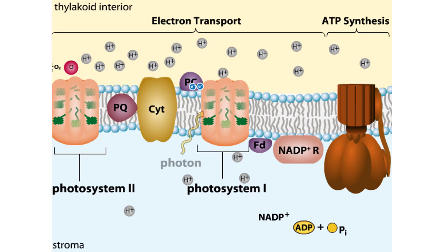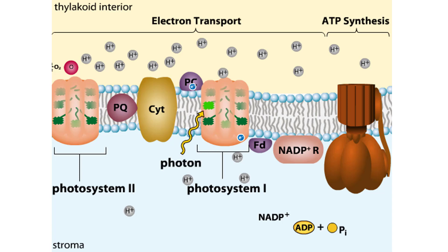When photons strike photosystem I, the light energy is absorbed and transferred to a chlorophyll molecule in the reaction center. With each photon, the chlorophyll molecule donates an excited electron to an electron acceptor. Electrons from plastocyanin replenish the electrons lost from the chlorophyll molecule.